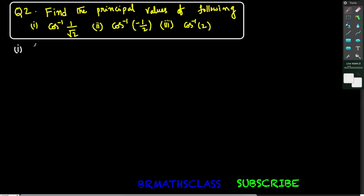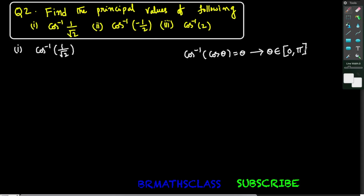Let's start this class. First bit: find the principal value of cos inverse of 1 by root 2. This is of the form cos inverse x. I want to do this problem by using the formula cos inverse of cos theta equals theta. This formula holds good only when theta belongs to the closed interval 0 to pi.